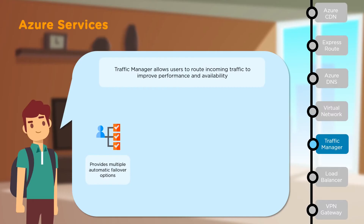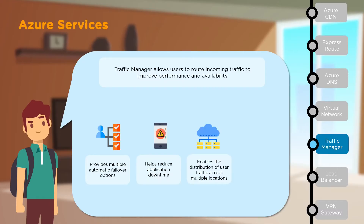Next, we have Traffic Manager, which allows you to route incoming traffic to improve performance and availability. It provides multiple failover options, so if a particular situation goes wrong, there's always an option to salvage the situation. It helps reduce application runtime and enables the distribution of user traffic across multiple locations. It also helps identify where the customer is connecting from across the world.